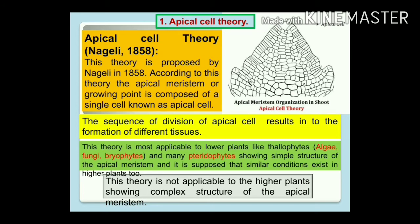This theory is most applicable to lower plants like thallophytes, algae, fungi, and bryophytes, which show a simple structure of the apical meristem. It is supposed that similar conditions exist in higher plants too, but most scientists opposed this, saying the theory is only applicable to lower plants, not to higher plants, due to their complex apical meristem structure.